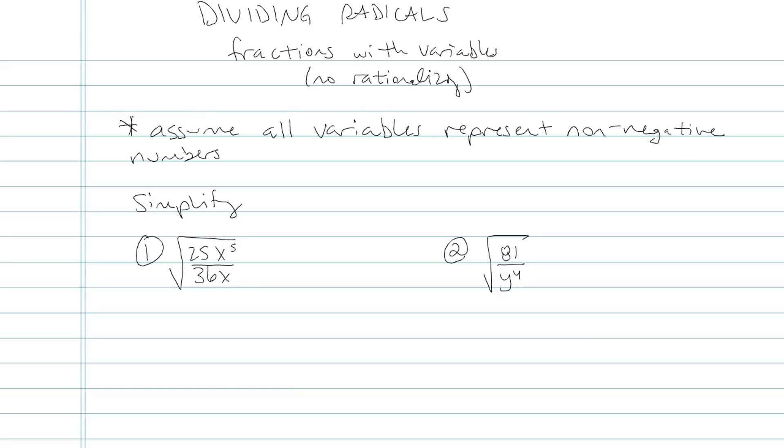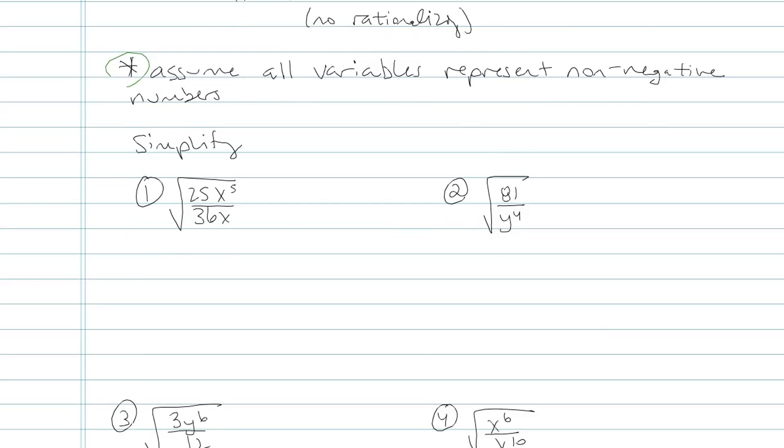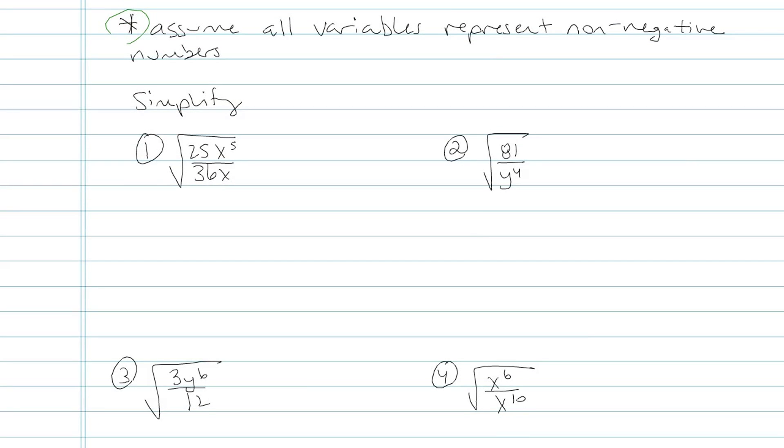Now, when you're working with any kinds of variables under square roots, your textbook should have this note here where you're asked to assume that all variables represent non-negative numbers. That's kind of a theoretical technicality that you're going to want to watch out for. If these variables were negative numbers, I'd be having some different answers.